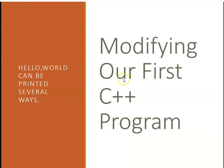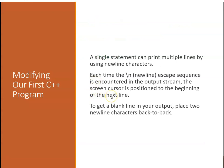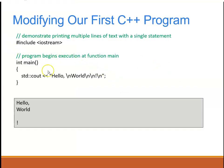Hello world can be printed in several ways. We could take our first program and instead of doing it on one line, we could do it on two: standard cout hello with no return, then standard cout world with a return. A single statement can also print multiple lines by using new line characters. Each time the new line character is encountered, the output stream positions the cursor at the next line. To get a blank line, you put two of them back to back. To modify our program again, we'd say cout hello slash n world slash n slash n exclamation point slash n, which would print hello on one line followed by comma, world on the next, two blank lines, and then the exclamation point.